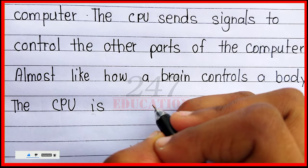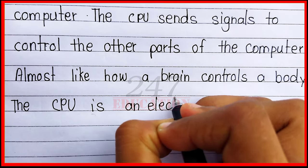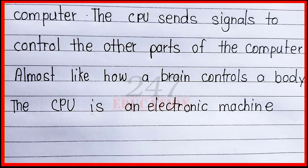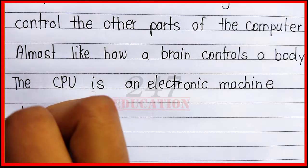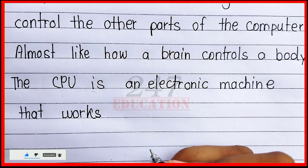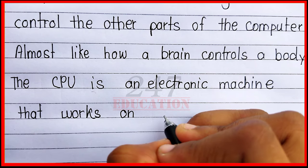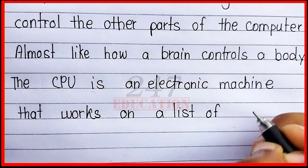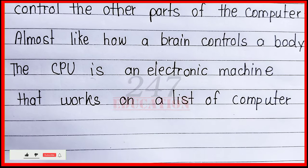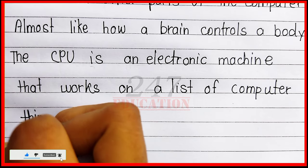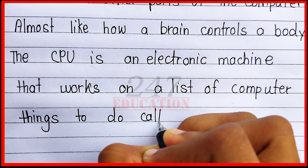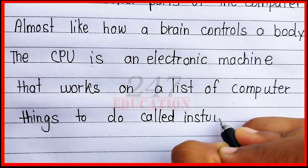The CPU is an electronic machine that works on a list of computer things to do, called instructions.